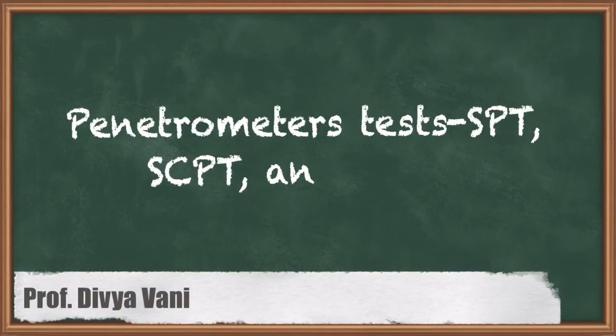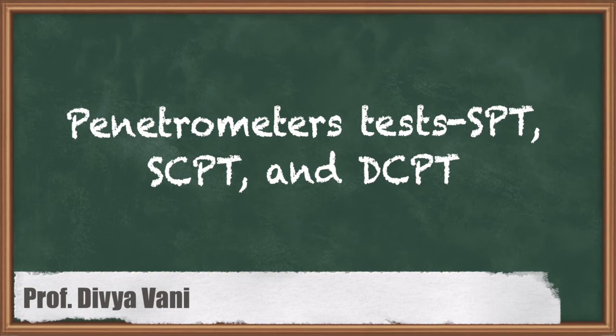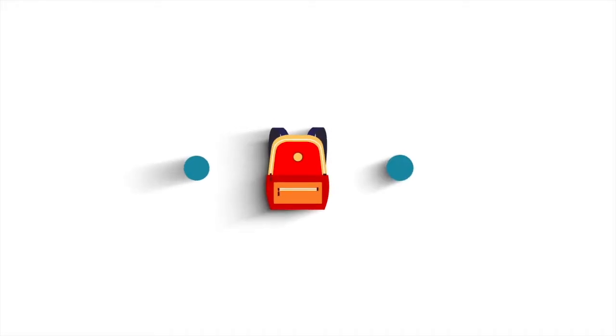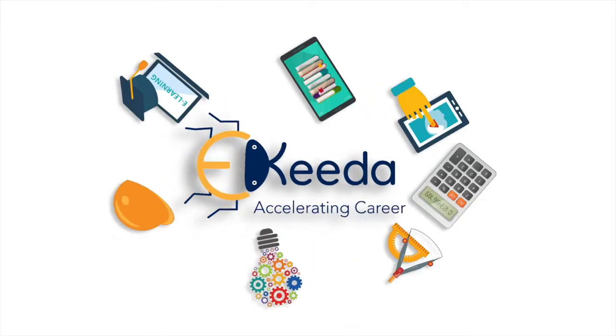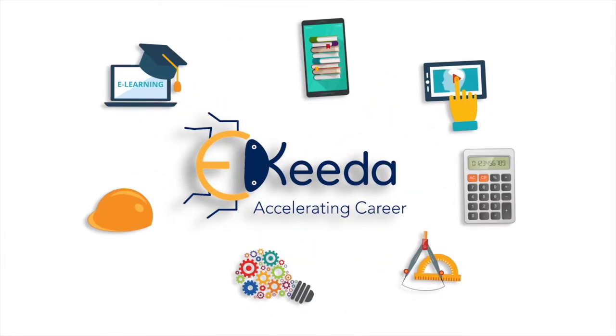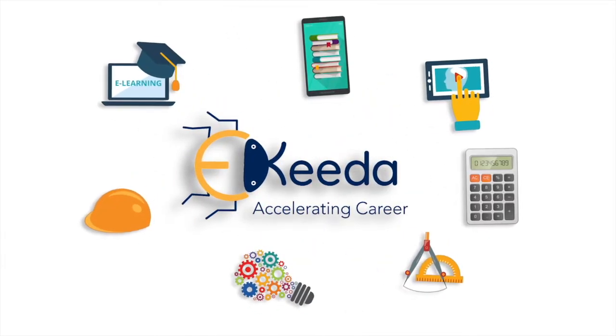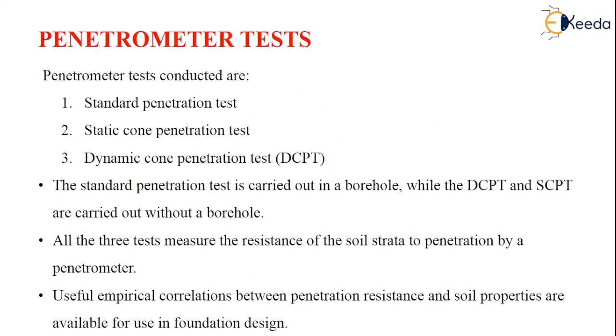Hello students, today we are going to learn about the next topic in chapter 6, that is compaction of soils and soil exploration. Coming to the next topic, it deals with the penetrometer testers, that is SPT, SCPT, and DCPT. Let us see what those testers are.